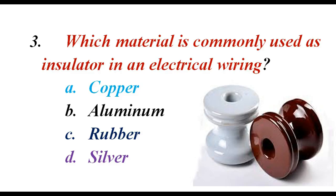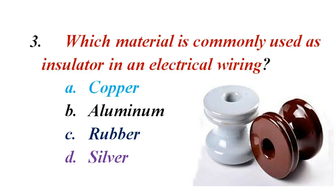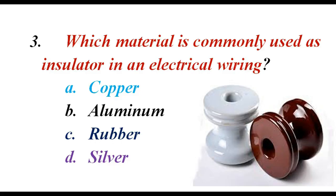Which material is commonly used as an insulator in electrical wiring? A. Copper. B. Aluminium. C. Rubber. D. Silver. The correct answer is C. Rubber.